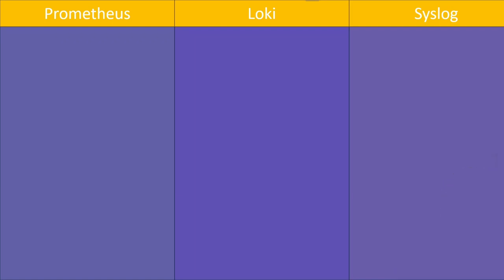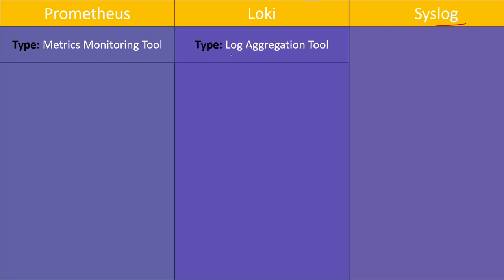Let's talk about the difference between monitoring tools so we understand when to use Prometheus and when not to. Prometheus is a metric-based monitoring system. The other tools I'll compare are Loki and syslog. Loki is a log aggregation tool — when running a Linux operating system we have many logs generated, and in that scenario Prometheus is not useful. For that you can use Loki. Syslog is a logging protocol.